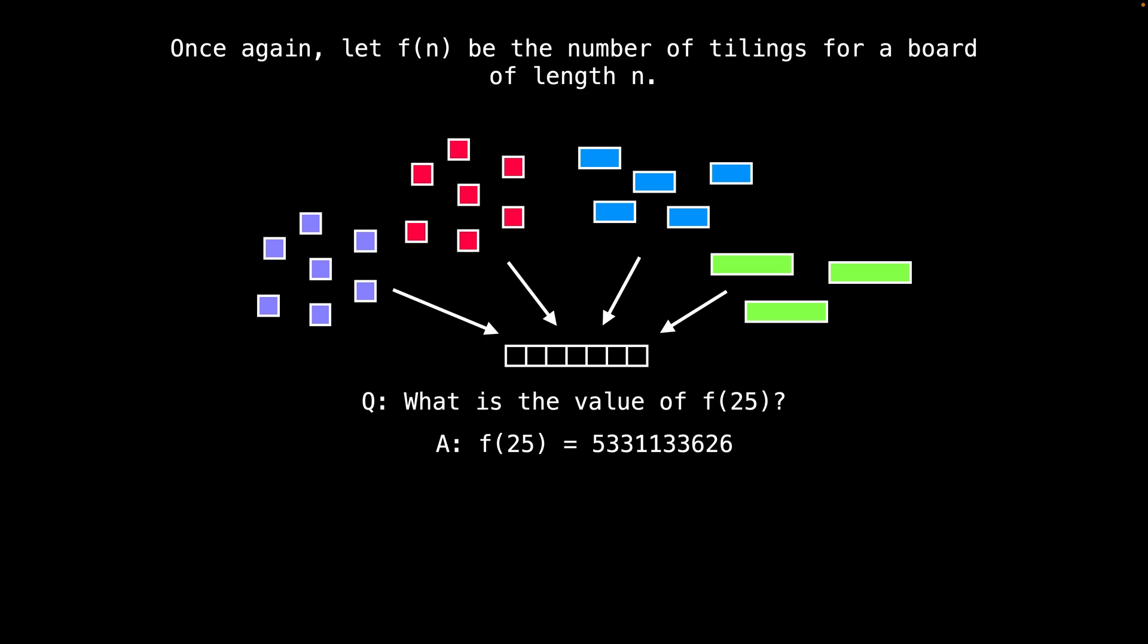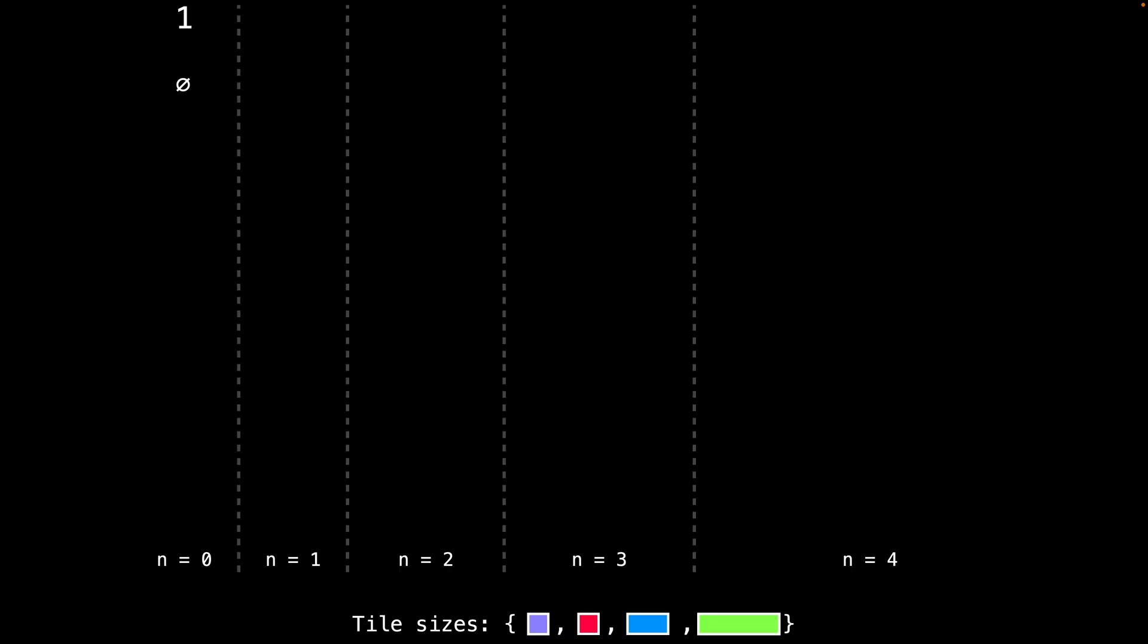The approach we're going to use to calculate f(n) is to construct all the ways to tile boards of length one, then construct all the ways to make boards of length two, then all boards of length three, and so on. As we do this, you'll notice that we will be able to reuse smaller known board tiling solutions to construct larger boards. We're going to look at how to solve the problem using the bottom up approach we looked at in the last video.